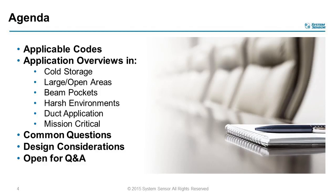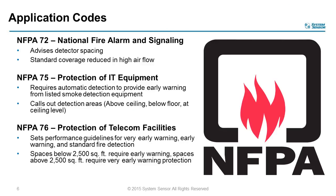To give a little history on the codes that have verbiage on air sampling detection: that's NFPA 72, the National Fire Alarm and Signaling Standard. NFPA 75 covers where protection is geared around IT — data centers and IT rooms — where it basically requires early warning fire and smoke detection, and it specifies which spaces require it: above ceiling, below floor, or in the space itself.